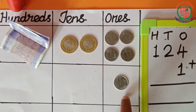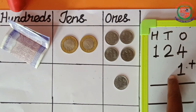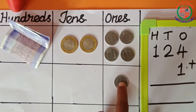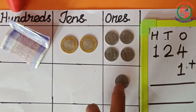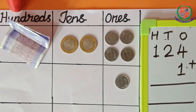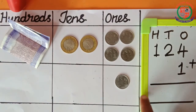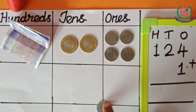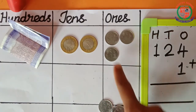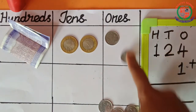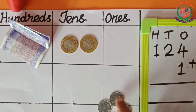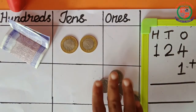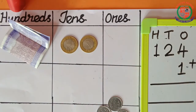Next, the second number is 1. So, we arrange 1 — one is here. Now we are going to add. First, we have to add the 1s place. Shall we add the 1s place? 1, 2, 3, 4, 5. So, how many 1s are there? Yes, 5. So, we have to write here the number 5.